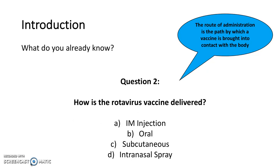Question 2 is: how is the rotavirus vaccine delivered? Different vaccines are given via different routes of administration. The answer here was option B. The rotavirus vaccine is given orally as a sweet-tasting gel.